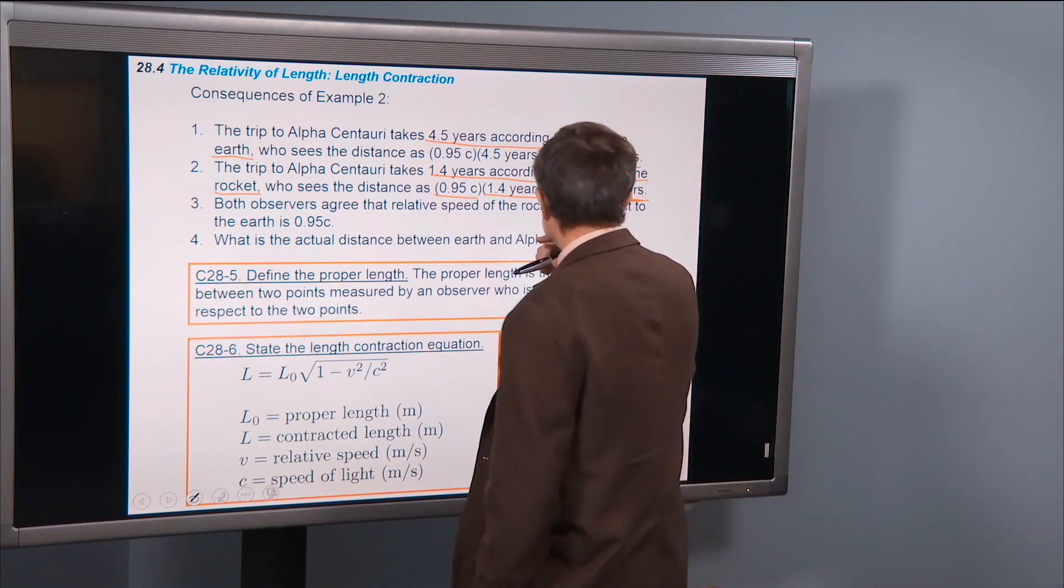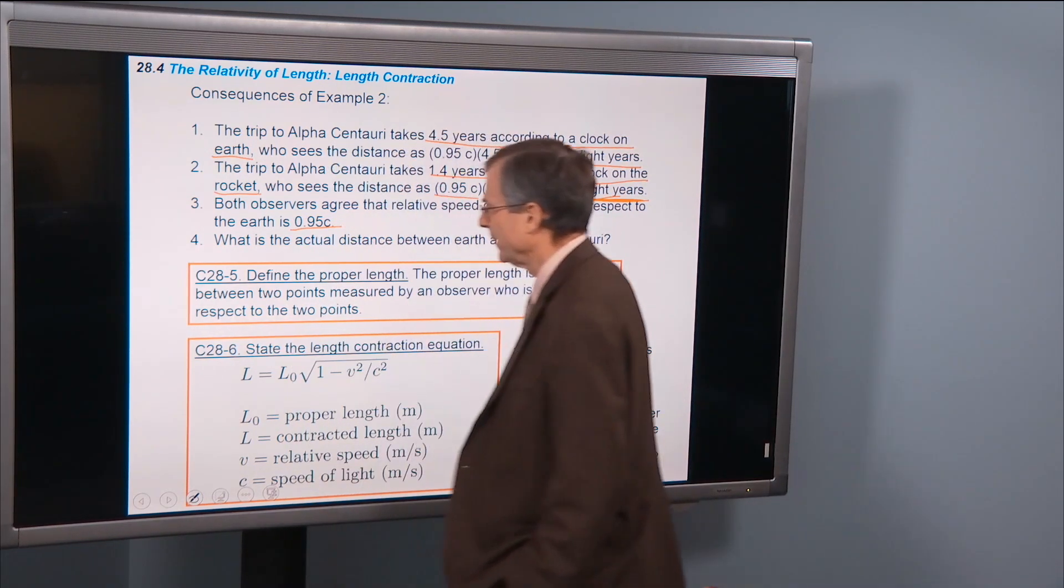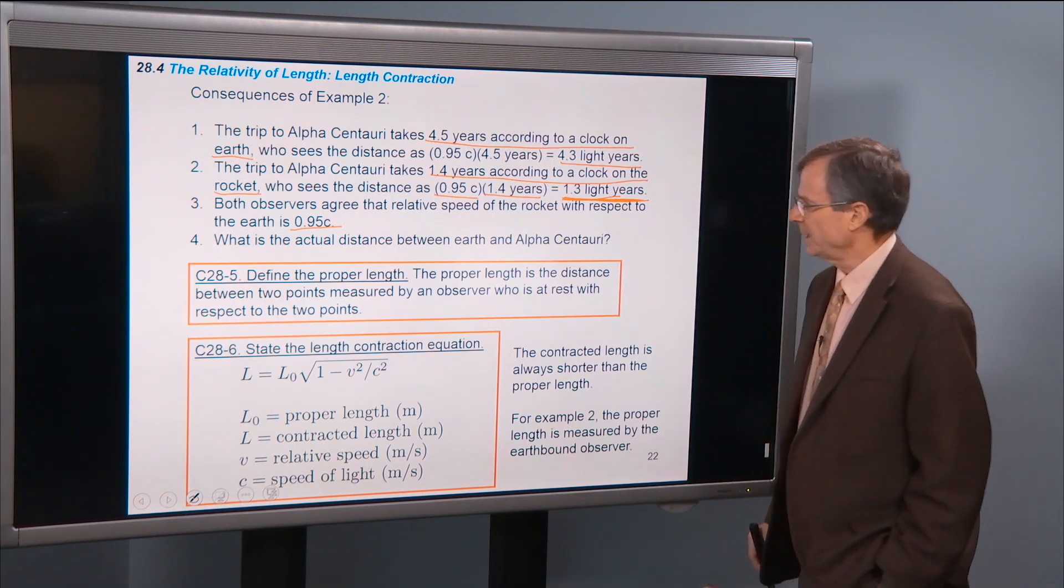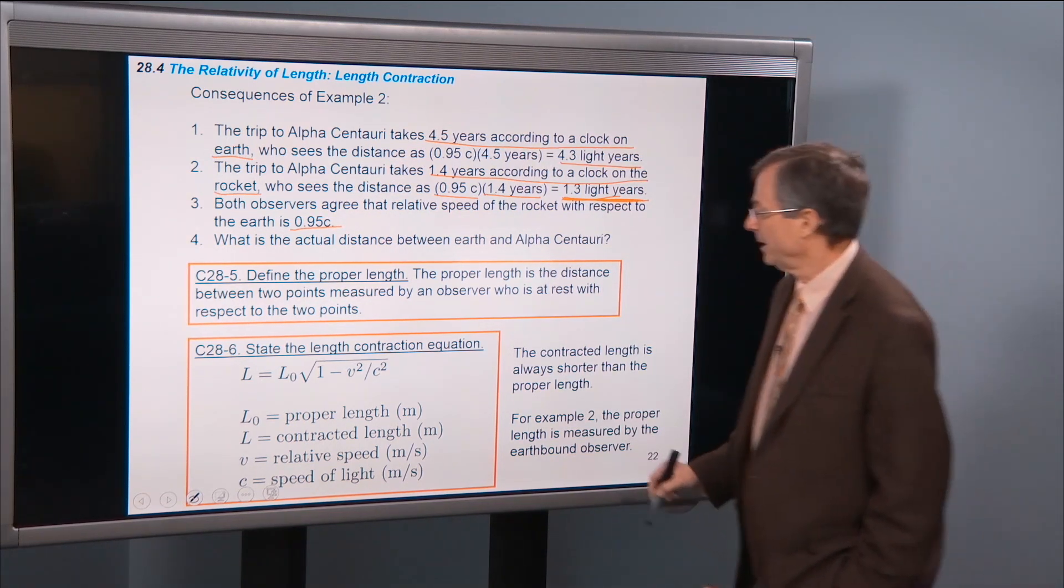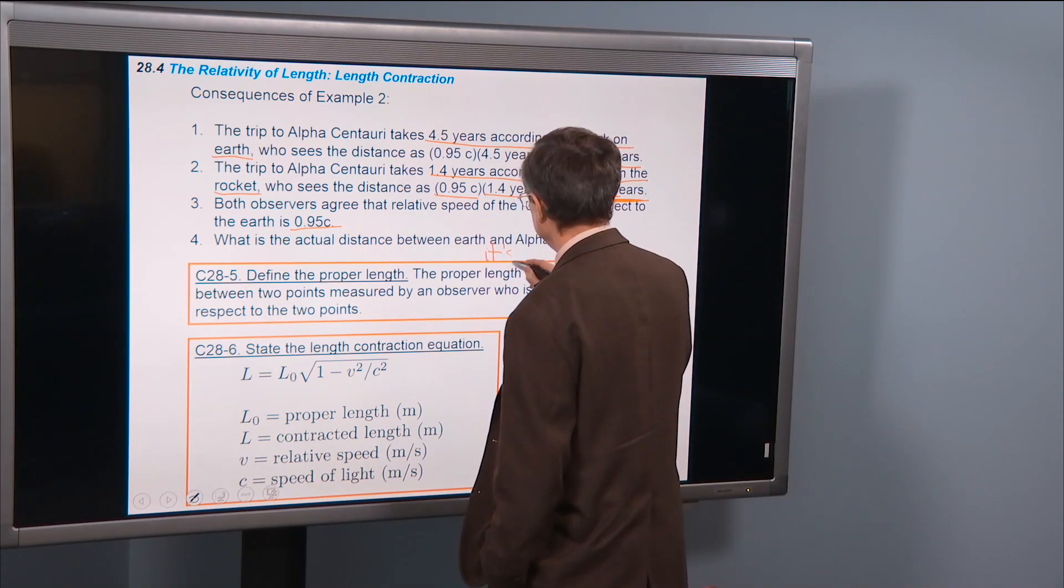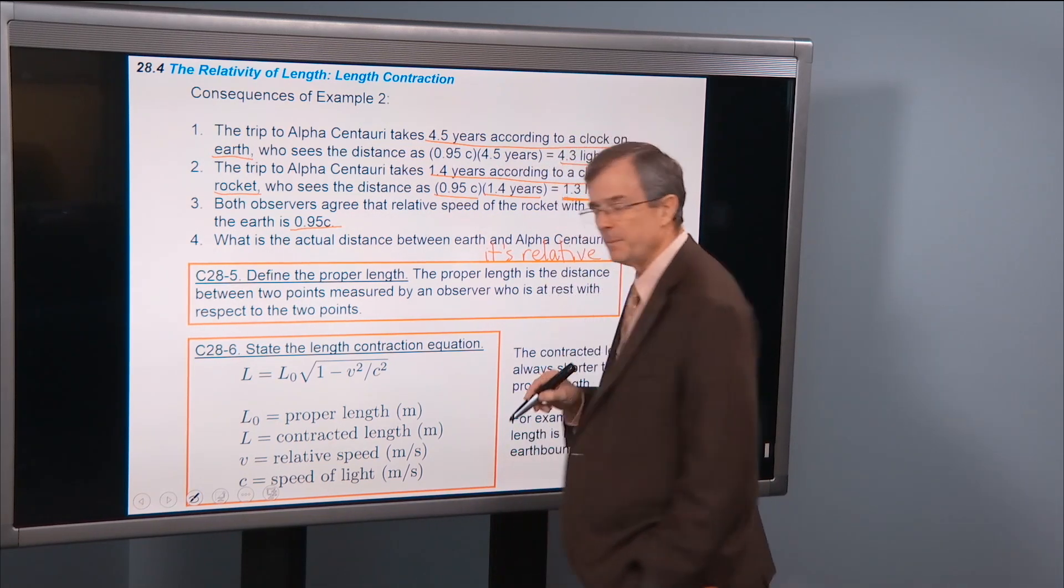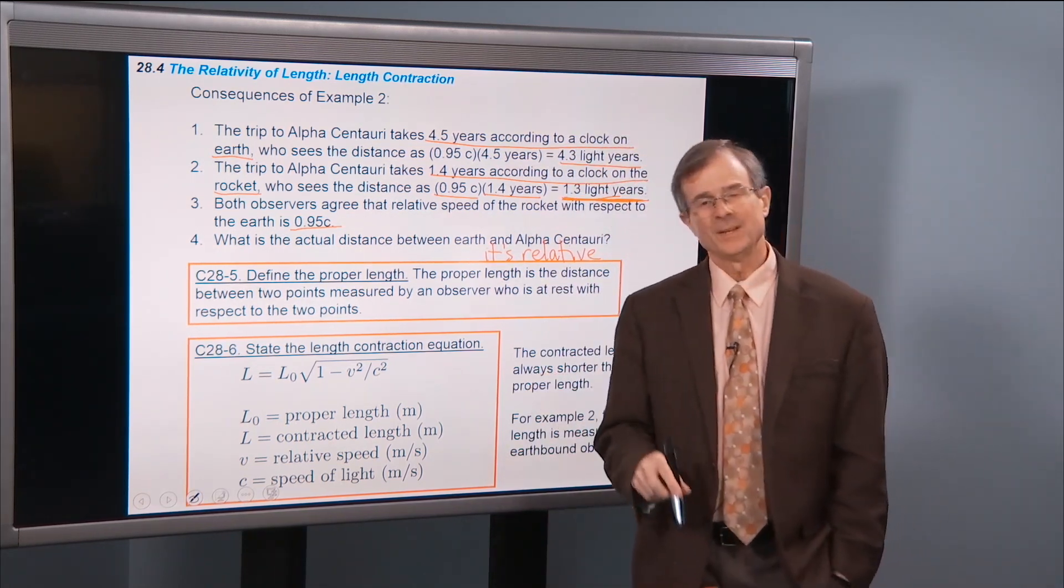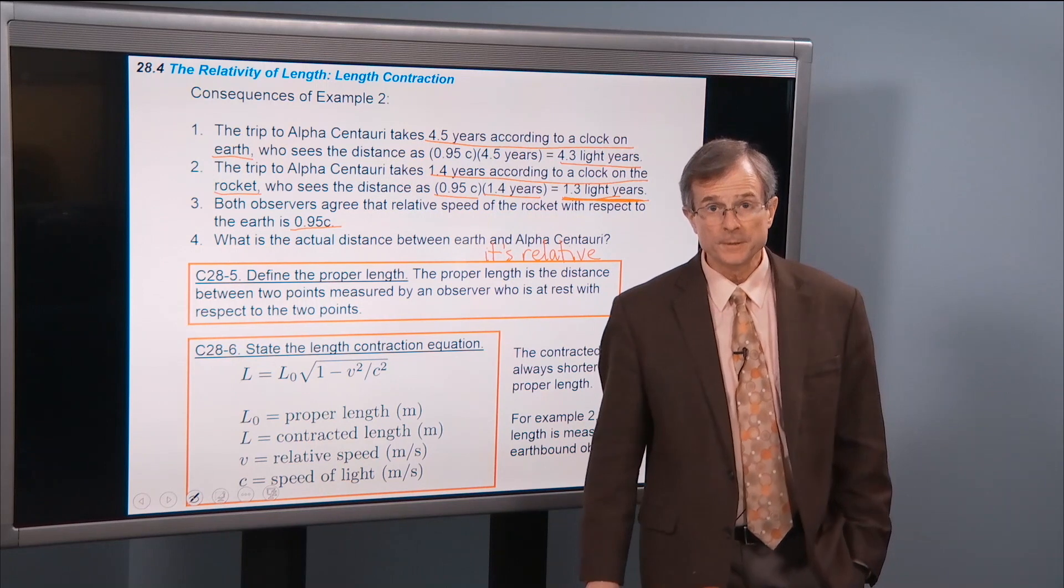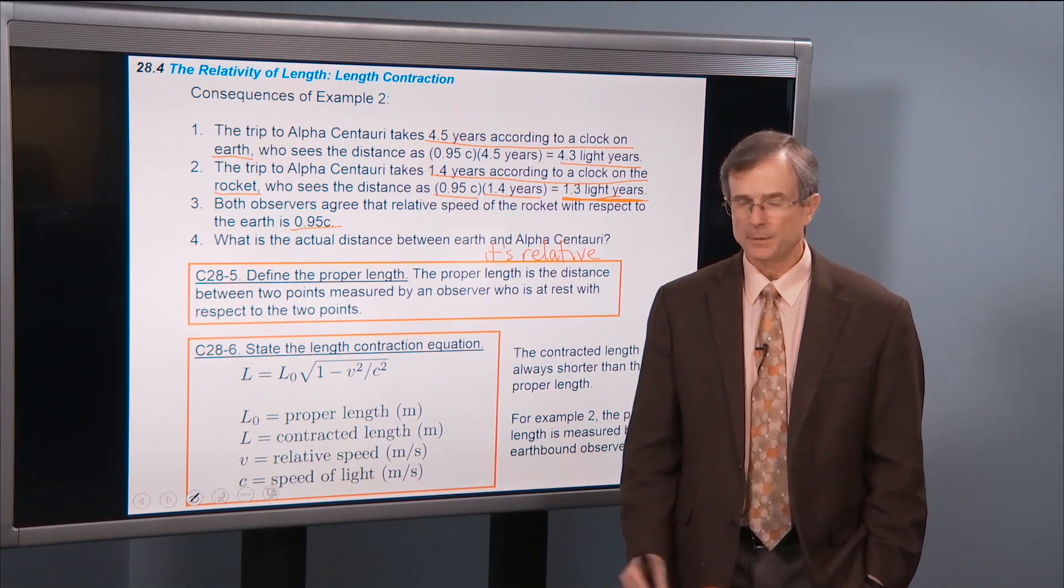Who's right? Neither one. They're both right. But the important thing is that that astronaut sees the distance that's contracted, it's shorter than the distance observed by the Earth-bound observer. Both observers agree that the relative speed of the rocket with respect to the Earth is 0.95c. What's the actual distance between the Earth and Alpha Centauri? The answer is it's relative. It means that it depends on your point of view. Different observers see a different answer, and both of them are right.